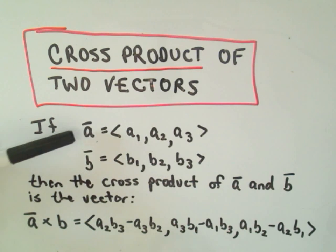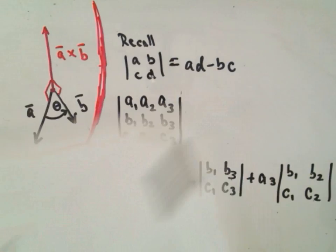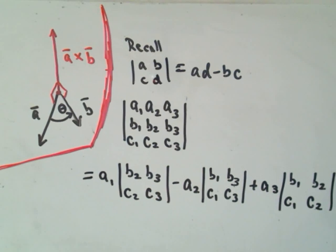So it says if vector A has components A1, A2, A3, B has components B1, B2, B3, then the cross product of those two vectors is defined to be a new vector and you calculate its components by using the bottom formula. So there's usually a more standard way to remember it and I'm going to talk about that but a couple things real quick.